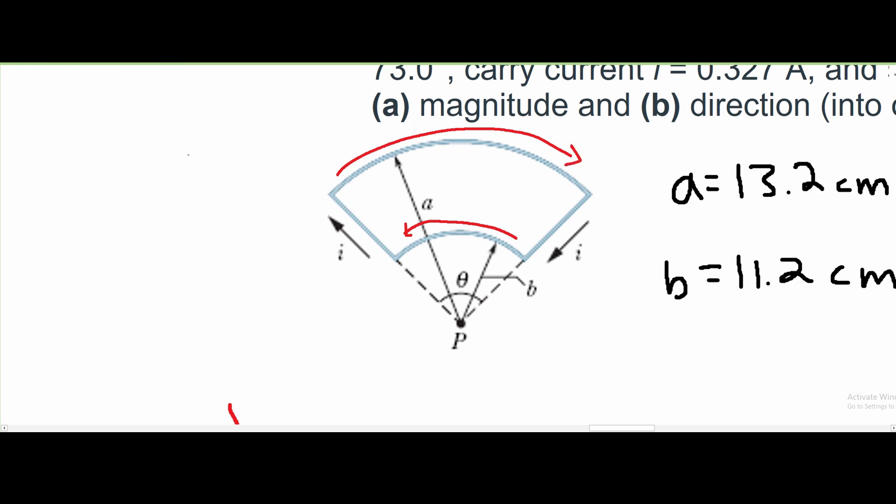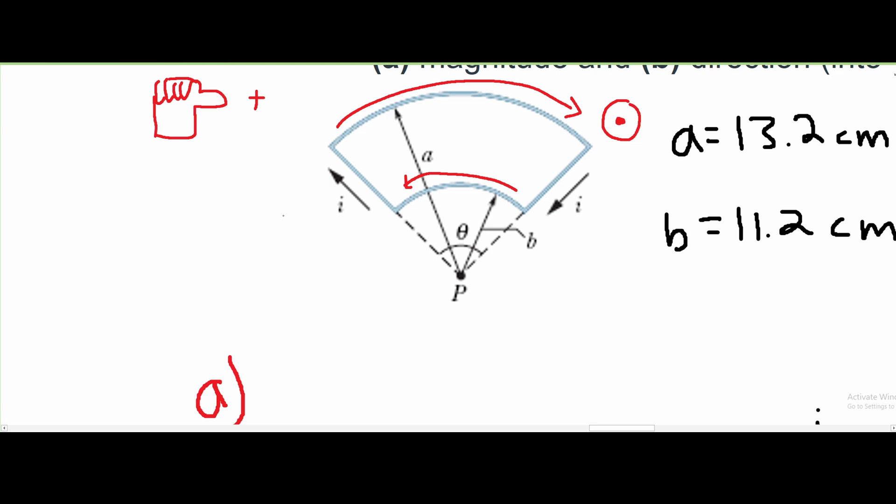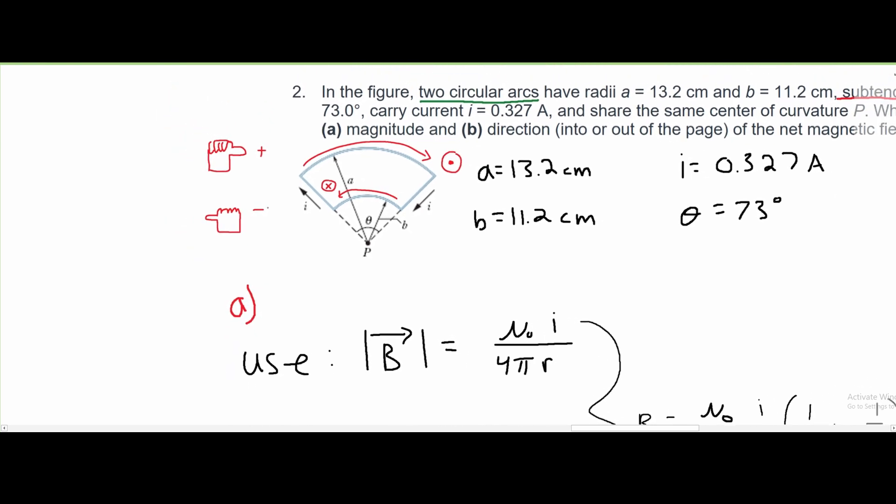If we use our right-hand rule for our top current, our thumb points this way and our fingers are curling out of the page. We have a circle with a small dot inside indicating it's going out of the page, and the current is positive. For our bottom current, our thumb points this way and our fingers are going into the page. So we have a circle with an X inside, and this is in the negative direction.